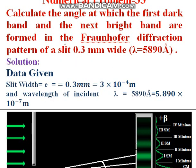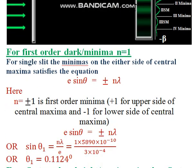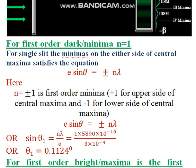The question: the first dark and next bright bands are formed in the Fraunhofer diffraction pattern of a slit 0.3 millimeter wide, and the wavelength is 5890 Ångström. Converting units — millimeters to meters and Ångströms to meters in SI. For the first order dark band, putting n = 1 into the minima equation, we obtain θ₁ = 0.1124 degrees.